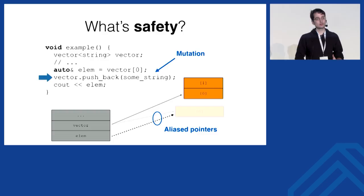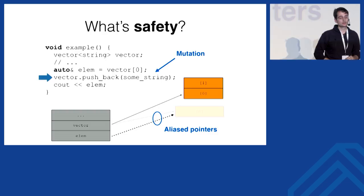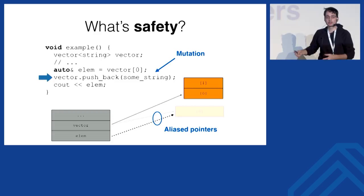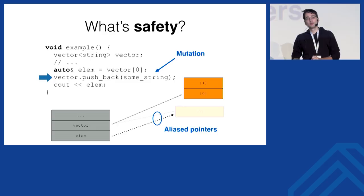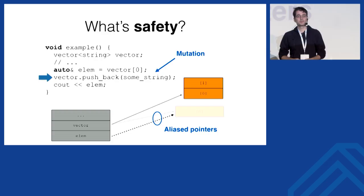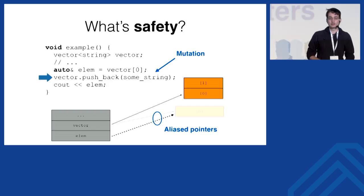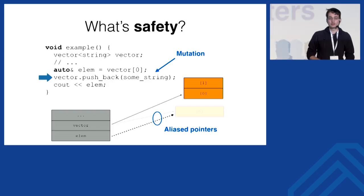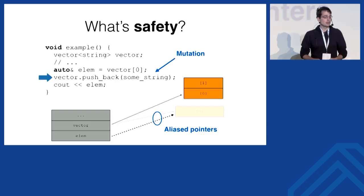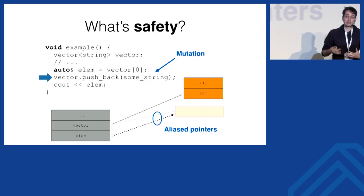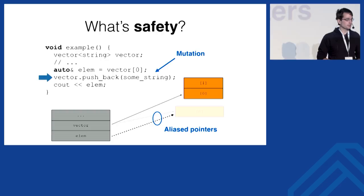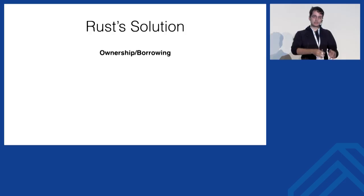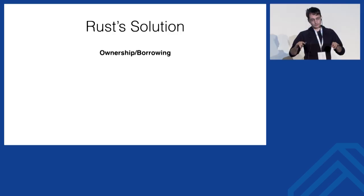Why did this go wrong? There are two key ingredients. First, aliased pointers — we have an element pointer and a vector pointer pointing to the same chunk of memory. That alone is fine, but when you add mutation — pushing new data onto the vector — it's the simultaneous act of both mutation and aliasing that causes problems. If you only had mutation, the vector was internally consistent. If you only had aliasing, nothing changed. Rust's solution to preventing simultaneous mutation and aliasing is called ownership and borrowing.